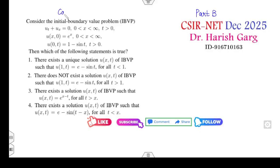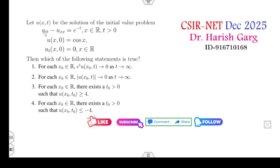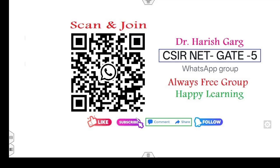The first question is related to the Cauchy problem. The second question is related to the non-homogeneous heat equation. The third is related to the non-homogeneous wave equations. How you can solve each question within a one-minute time period. All are Part B questions, so you can easily get three plus three plus three, that is nine marks — a very comfortable zone. How you can solve these questions within a couple of seconds — it's a very simple way I will tell you in this lecture.